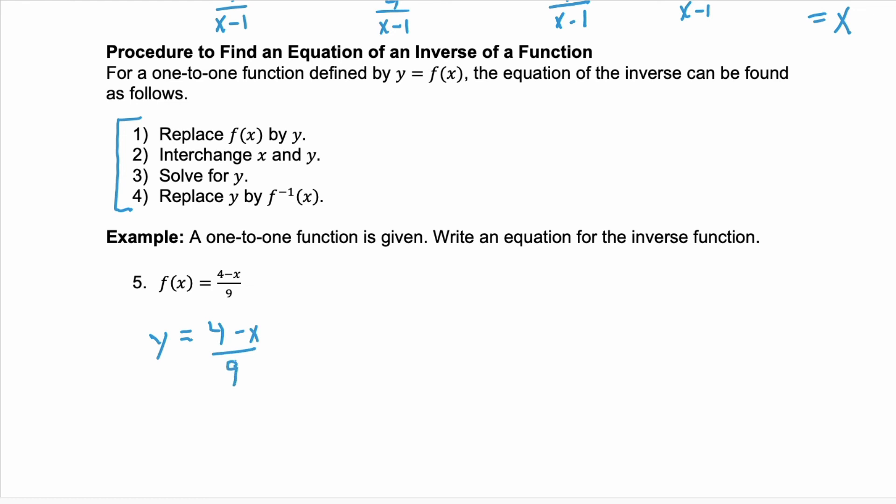Step two, you're going to interchange your x and your y. So you'll have x equals four minus y over nine.